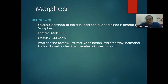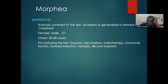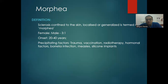Next is morphea — another connective tissue disorder confined to the skin, defined by sclerosis and skin thickening. It can be localized or generalized. Female to male ratio is 3:1. Onset is in the second to fourth decade. Precipitating factors include trauma, vaccination, radiotherapy, hormonal factors, Borrelia infection, measles, and silicone implants.